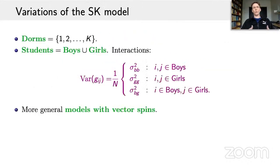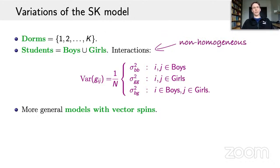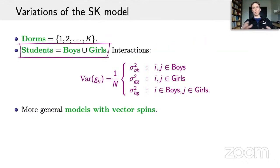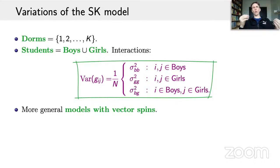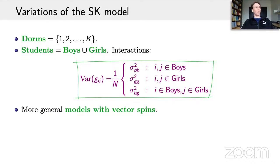From this one can derive many important consequences and solve various variations of the SK model. For example, the number of dorms doesn't have to be just two — one can consider the Potts version of the SK model. Also, the interactions can be non-homogeneous in the sense that one can split the students into several groups, for example into boys and girls, and make the variance of the interaction dependent on which groups the pair of students belongs to — so interactions between boys and boys, girls and girls, or boys and girls can all have different variances. One can solve a large class of models of this type, as well as more general models with vector spins.